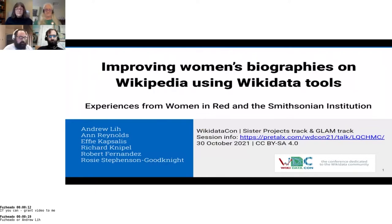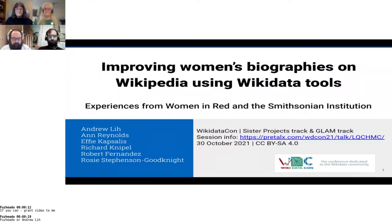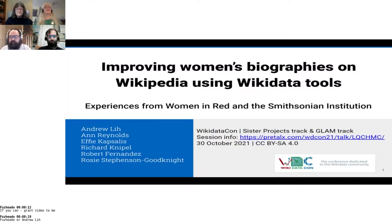We'll introduce ourselves quickly. Starting with Andrew: I'm Andrew Lee, also known as UserFuzzHeddo, and I'm the Smithsonian Wikimedian at large. And I'm Ann Reynolds-Aronce on WikiWorld, based in Sydney, and I do stuff with Women in Red and Wikidata Commons and so forth.